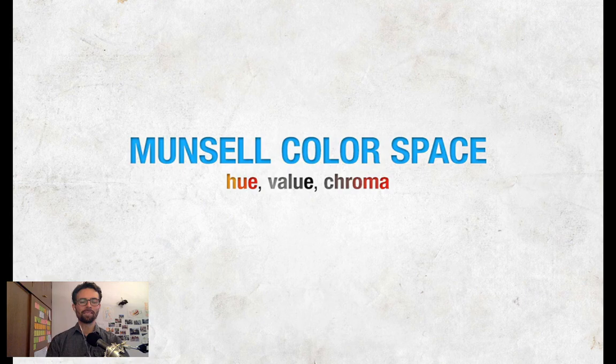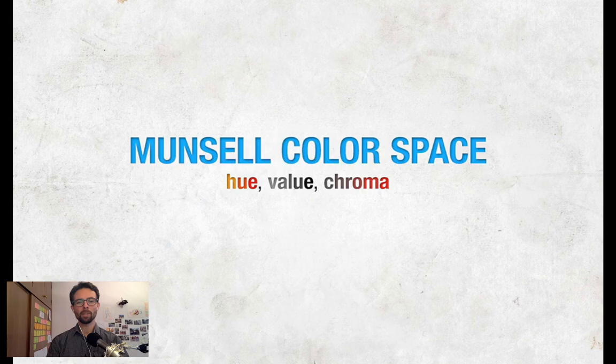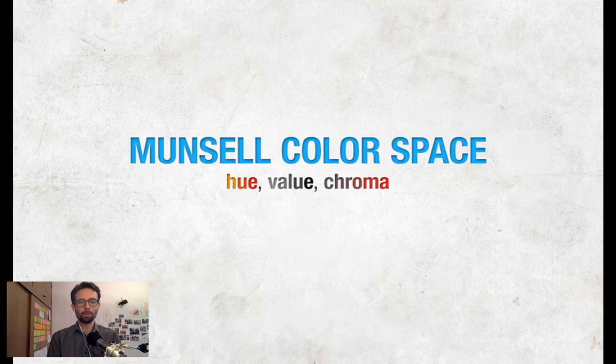The framework I use when I work with color is the Munsell system. I don't know how many of you are familiar with that, but even if you're not, you've probably heard the terms hue, value, and chroma — or if not chroma, then maybe saturation, which is a synonym. I'll explain each of these three dimensions of color. The word 'dimension' is appropriate because you can think of color as a color space with three dimensions, and this system allows you to navigate around that space.